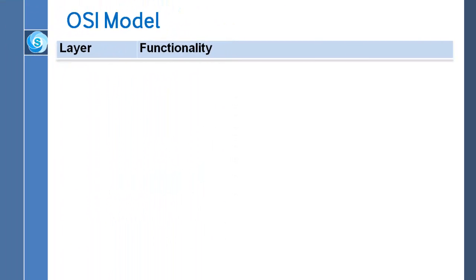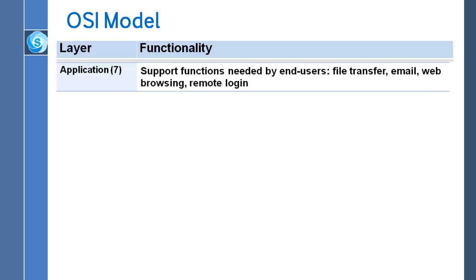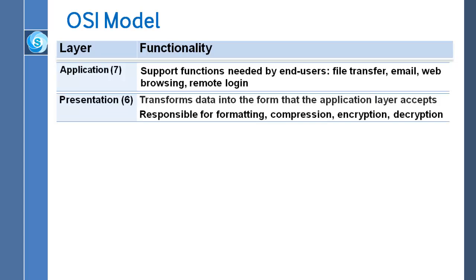Now let's discuss the functions of each layer. The topmost layer is the application layer, also known as layer 7. It supports various functions needed by end users. The application layer contains various protocols frequently used by users, such as HTTP for browsing the web, SMTP for sending email, and FTP for file transfer. Layer 6 is the presentation layer. It transforms data into the form that the application layer accepts and is responsible for formatting, compression, encryption, and decryption.